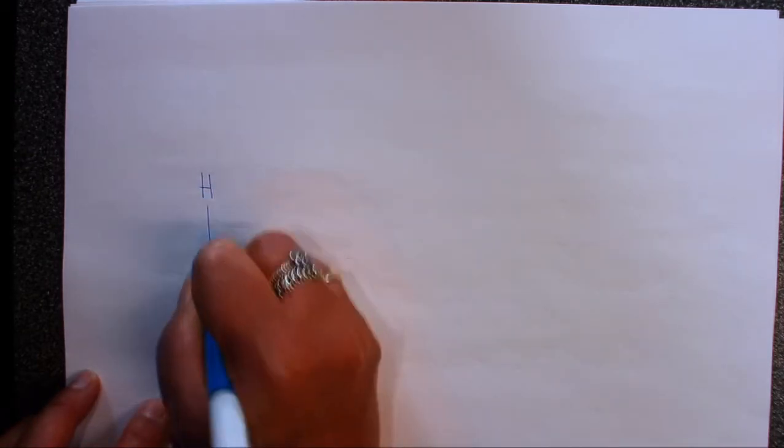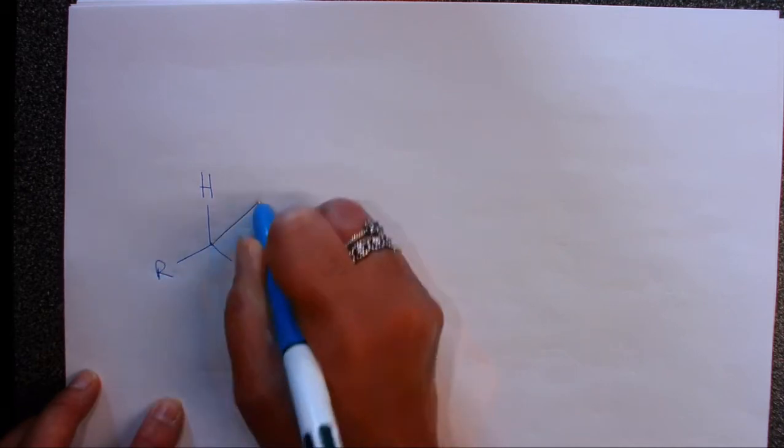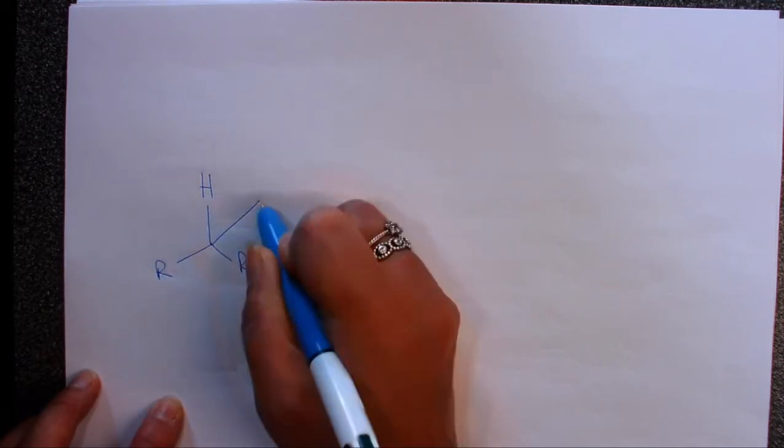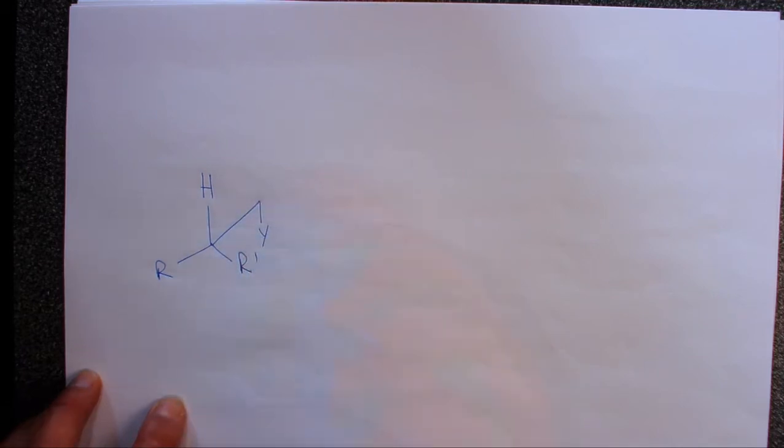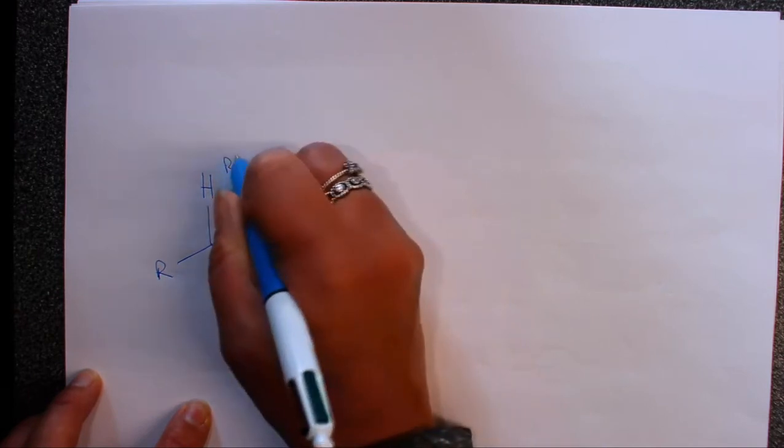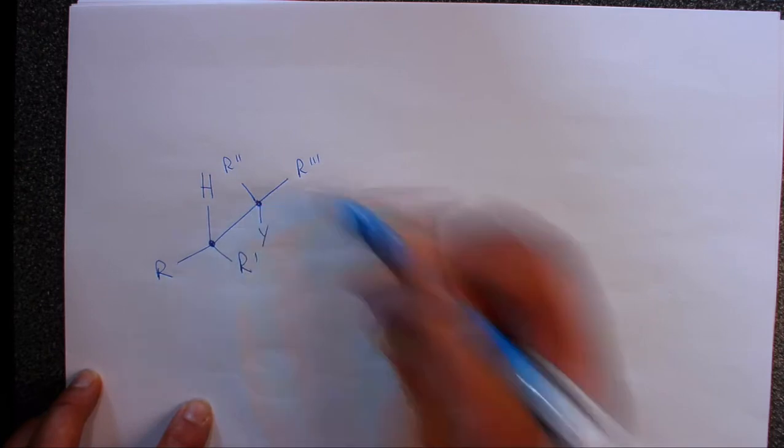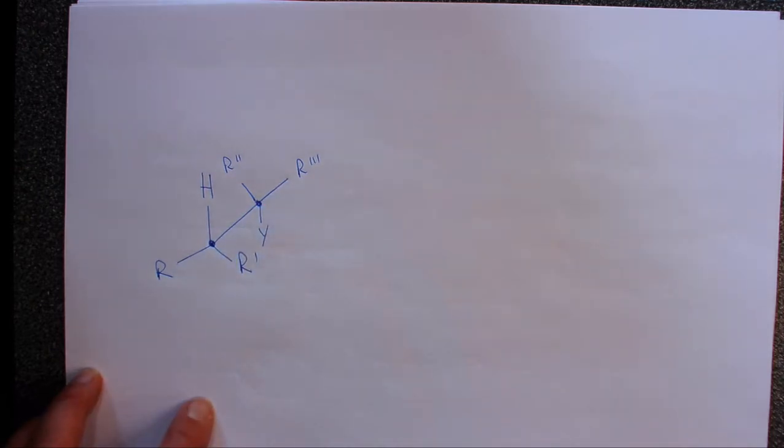So in this slide I just wanted to go over again the stereochemistry of E2 reactions. In E2 reactions, if we were to draw the substrate as you have on one of your slides, let's imagine we've got a molecule with a hydrogen, a leaving group which we'll call Y in this case, and we've got different substituents at each end. So this is the carbon-carbon area where we're going to make the double bond.